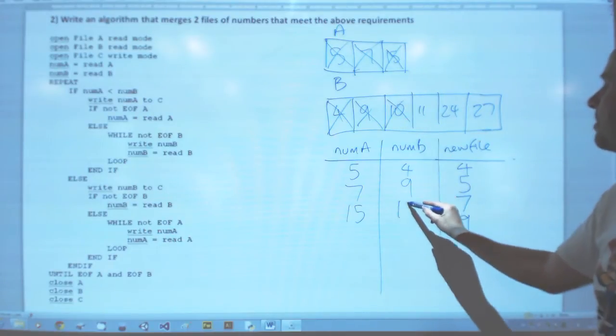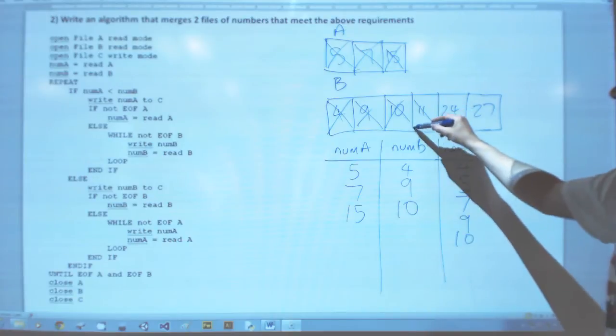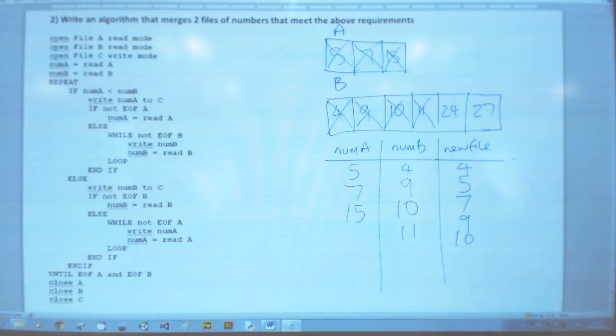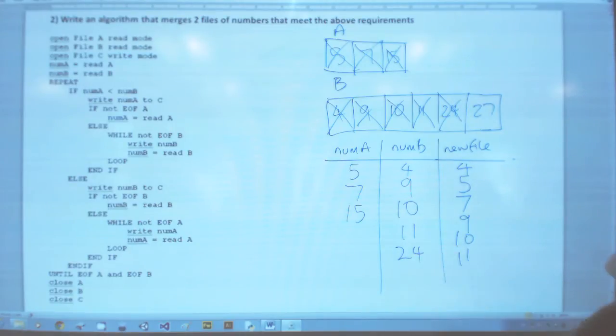Compare again, write out the 10. Read another item from B - 11 is smaller, read another item from B which will be 24. Compare again, 15. So we want to read another item from A.